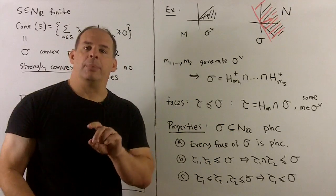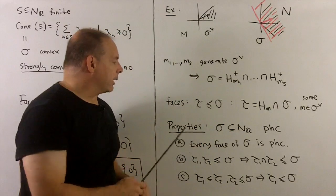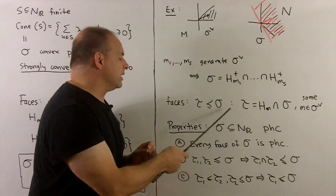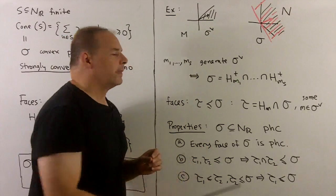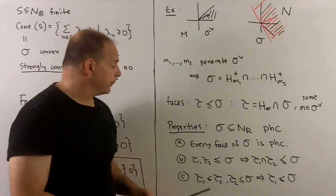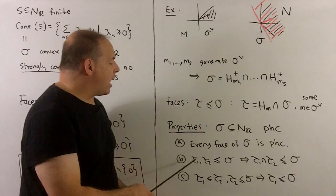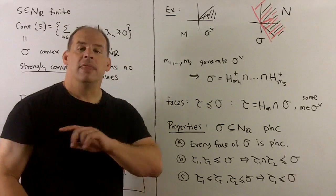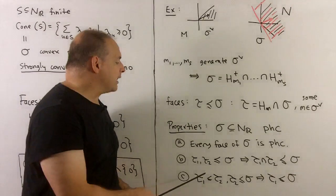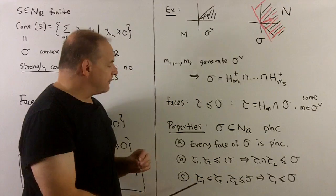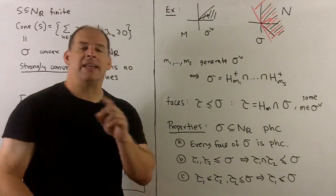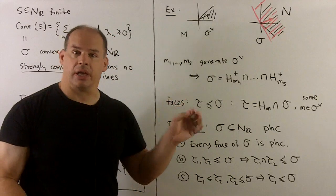Now we info-dump some properties. If sigma is a convex polyhedral cone in N_R, then every face of sigma is also a polyhedral cone. If tau_1 and tau_2 are faces of sigma, their intersection is also a face of sigma. Finally, transitivity: if tau_1 is a face of tau_2 and tau_2 is a face of sigma, then tau_1 is also a face of sigma.